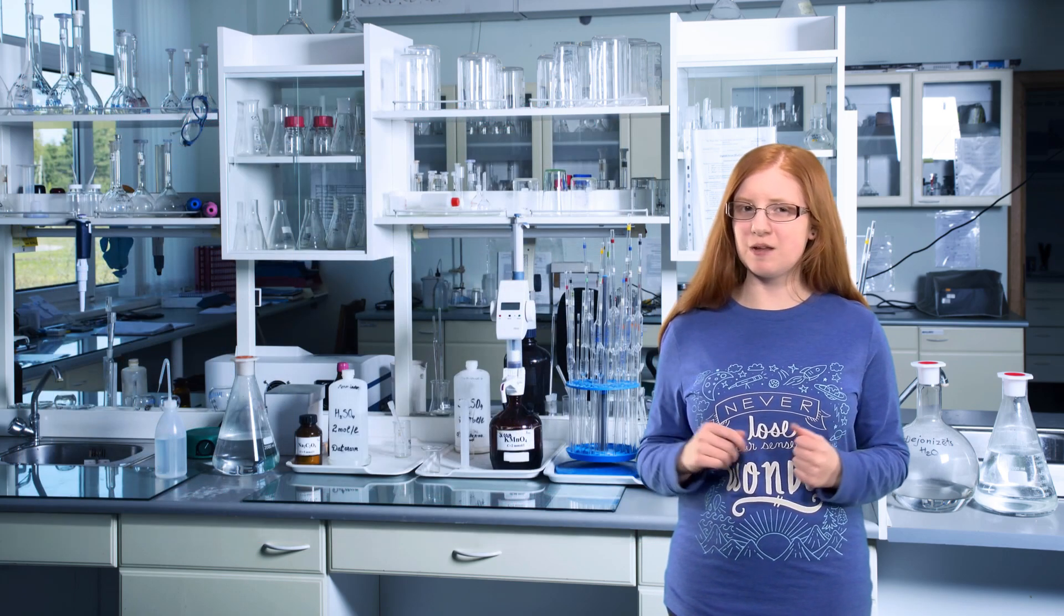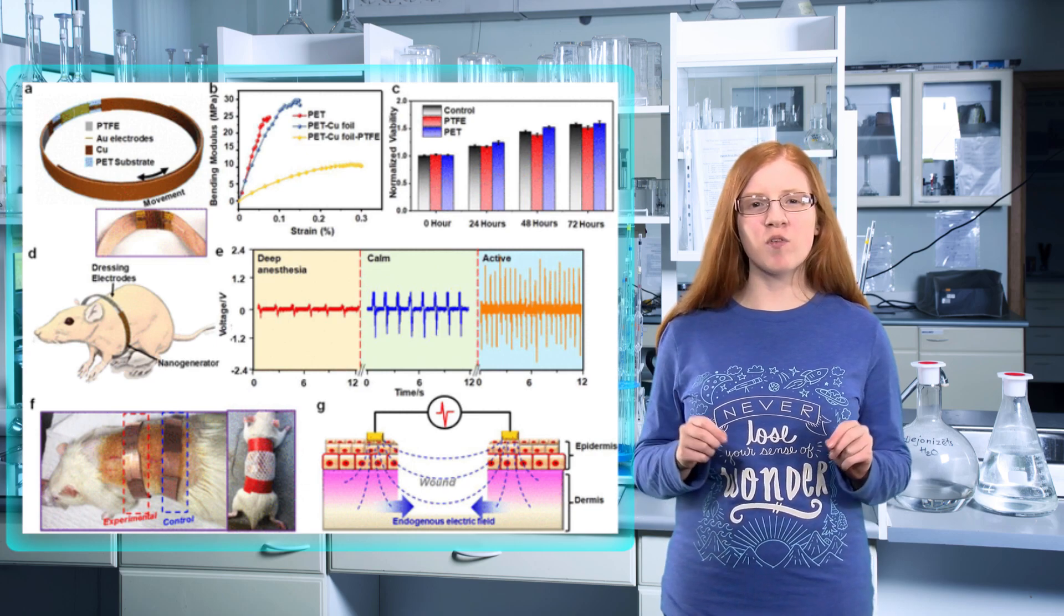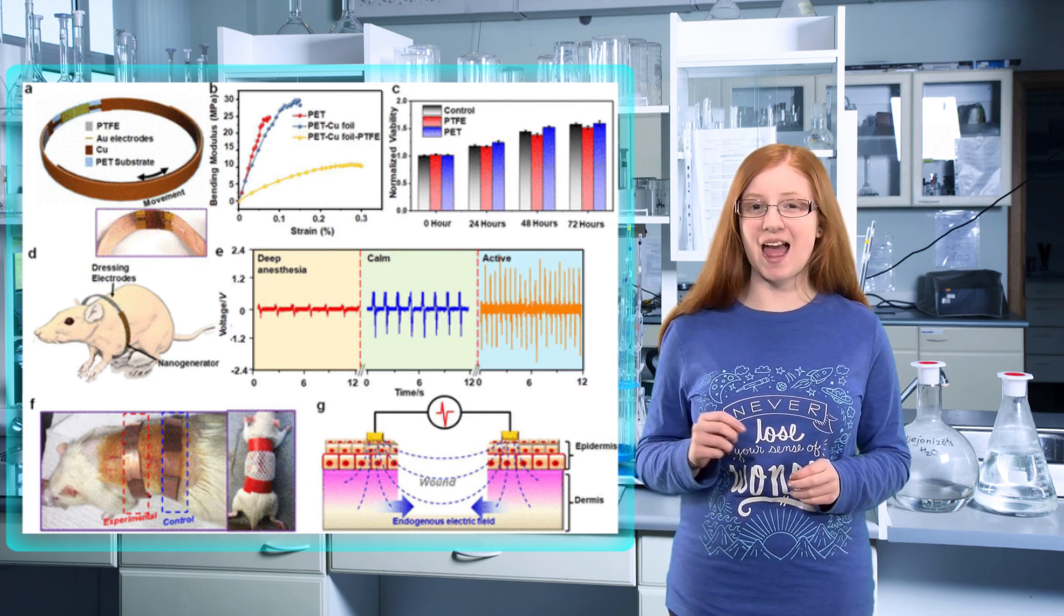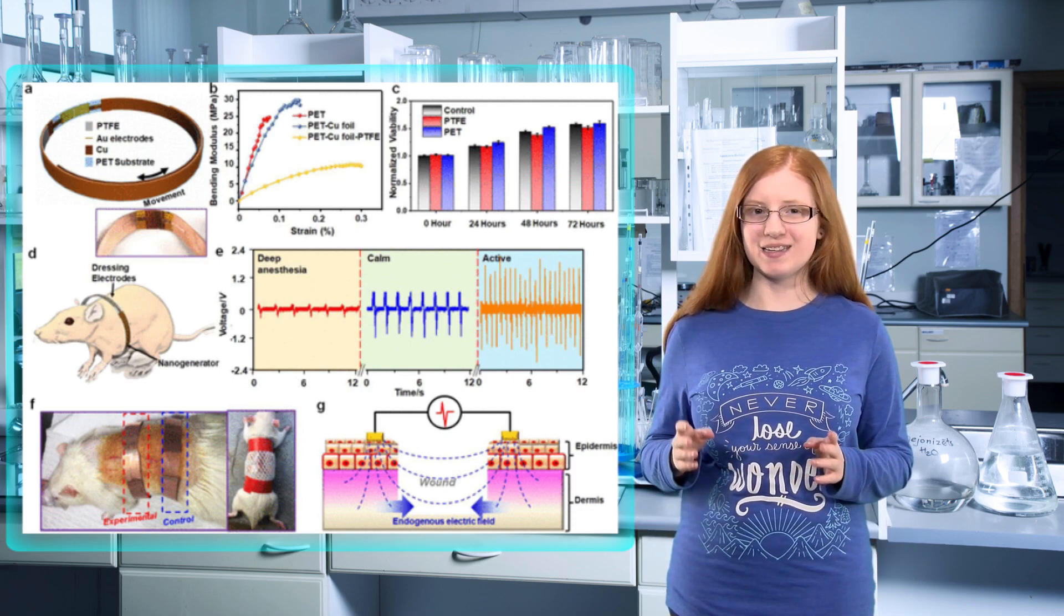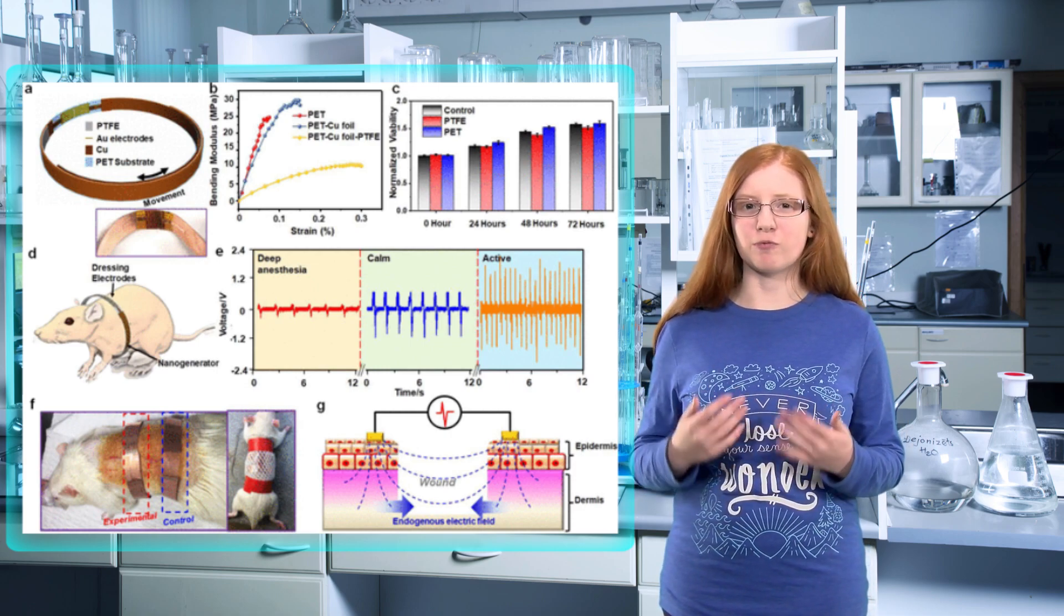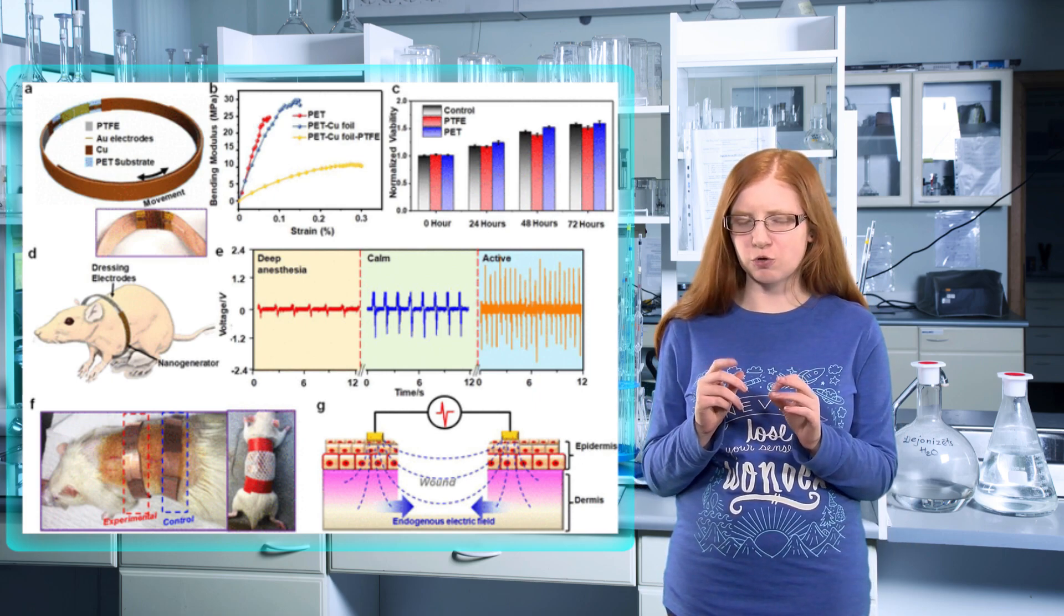Weibu Kai, Zhu Dong Wang, and their colleagues wanted to make a flexible, self-powered electrical bandage. They made a wearable nanogenerator by overlapping sheets of polytetrafluoroethylene or PTFE, copper foil, and polyethylene terephthalate or PET. This e-bandage converted skin movements on rats, like breathing and movement, into small electrical pulses.